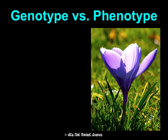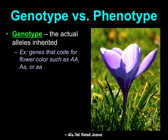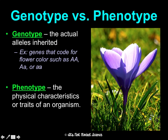Genotype versus phenotype: a genotype is the actual alleles you inherit — are you inheriting two dominant, a dominant and a recessive, or two recessive? The phenotype is the physical trait or characteristic of the organism that you can actually see, such as purple flowers or white flowers.